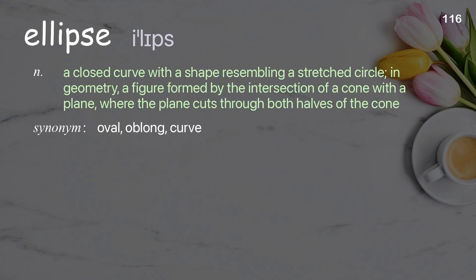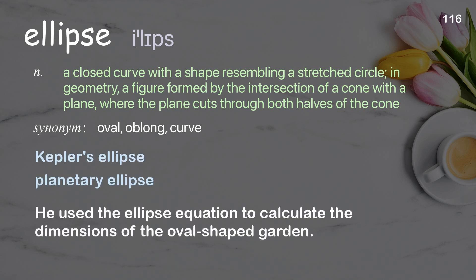Ellipse: a closed curve with a shape resembling a stretched circle. In geometry, a figure formed by the intersection of a cone with a plane where the plane cuts through both halves of the cone. Examples: Kepler's ellipse, planetary ellipse. He used the ellipse equation to calculate the dimensions of the oval-shaped garden.